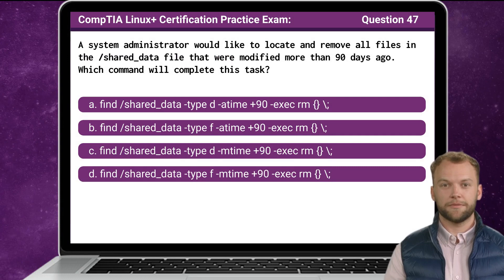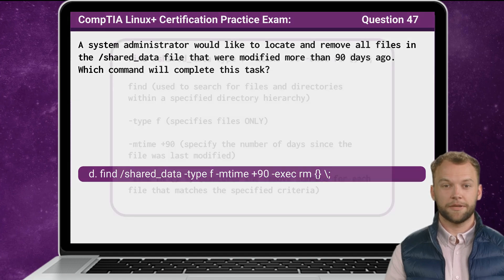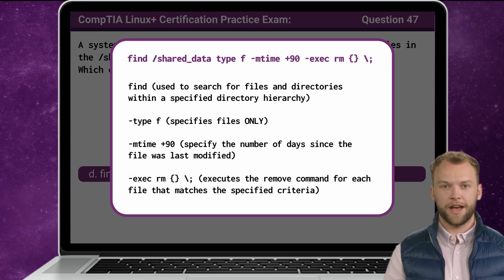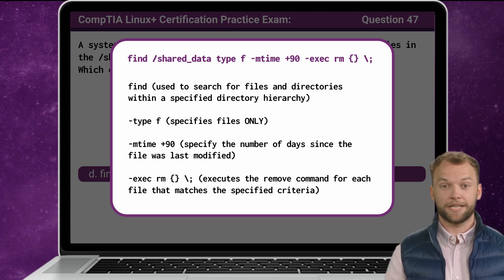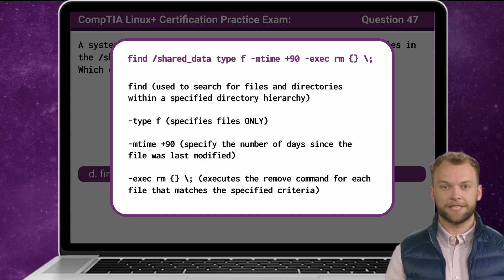Question 47. In this case, the shared_data directory. The -type f option specifies that only files, not directories, should be considered in the search. -mtime +90 is used to specify the number of days since the file was last modified; +90 indicates files that were modified more than 90 days ago. The last part of this command executes the remove command for each file that matches the specified criteria.